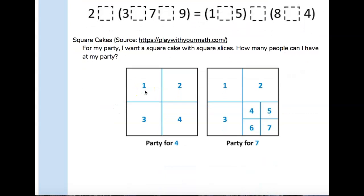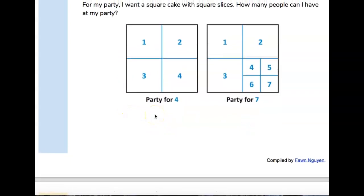All right. So square cakes. For my party, I want a square cake with square slices. How many people can I have at my party? So for a party of 4... Okay. I see. They've given you a party of 4. They want you to do... This is party of 7.